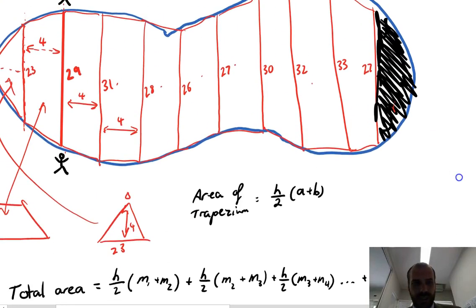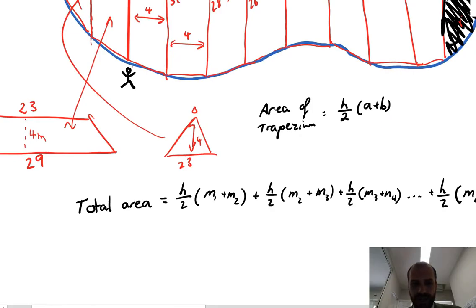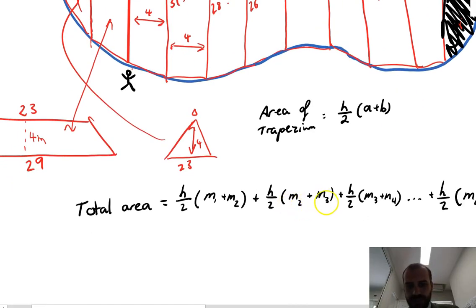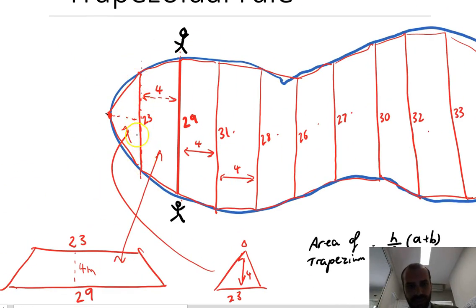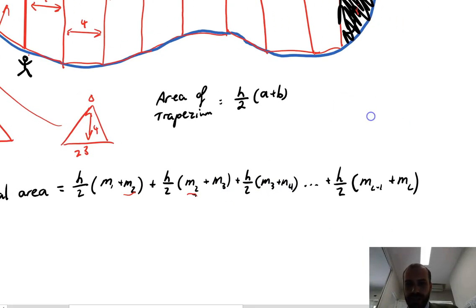Measurement 1 plus measurement 2 in this case would be 0 plus 23. Our next trapezium is measurement 2 plus measurement 3, and measurement 2 appears here but also appears here — because this trapezium's bottom is the next trapezium's top. That continues: measurement 3 is the next trapezium's bottom, and so on, all the way up to the last trapezium, which is measurement (l−1) plus measurement last.